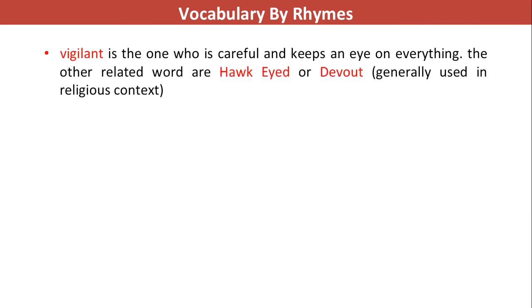A small phrase you can use for vigilant is hawk-eyed — a person who sees and looks upon things like a hawk. Or devout as well, though devout is usually used in a religious context. So the words to use are hawk-eyed or vigilant. Laconic comes from the word 'loke' — as covered in our etymological lecture. Laconic is a person who speaks less but whose words are very deep and important.